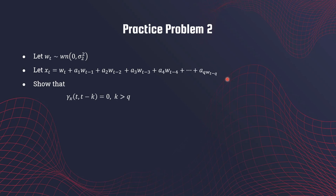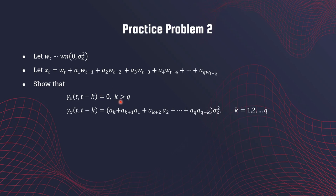We want to show that the auto covariance function of X at times t and t−k, where k is greater than q, equals zero. That means if we go back more than q steps in the time series, the auto covariance is zero. However, if we take smaller steps — not going further than q steps back — then the auto covariance function has a non-zero form for k from 1 to q.